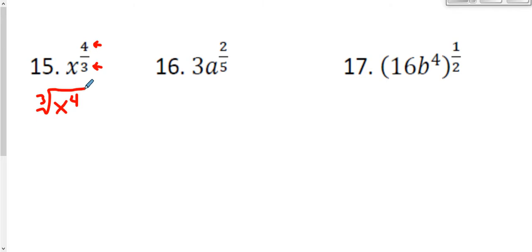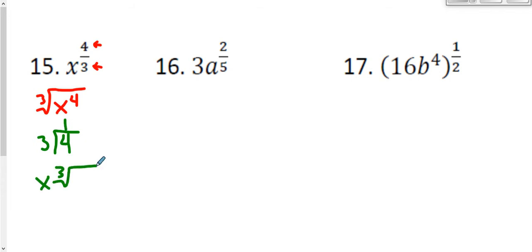Now we just have to see how we can simplify. To simplify, we're going to use our division process. I have four x's and I need to divide them into three groups. Three goes into four once, which tells me that one x can come to the front. My remainder is one, which means one x is trapped inside. That's it — number 15 is finished.